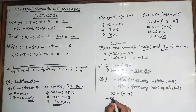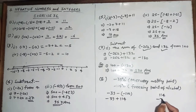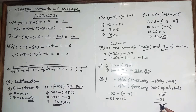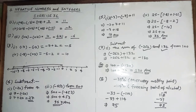So minus 39 minus minus 114: minus into minus becomes plus 114. So it will be 114 minus 39. That equals: 4 minus 9 — borrow a carry, 10 minus 9 equals 1 with carry, then 10 minus 3 equals 7. So 75. The answer is 75 degrees — meaning the melting point of mercury is 75 degrees warmer than the freezing point of alcohol.